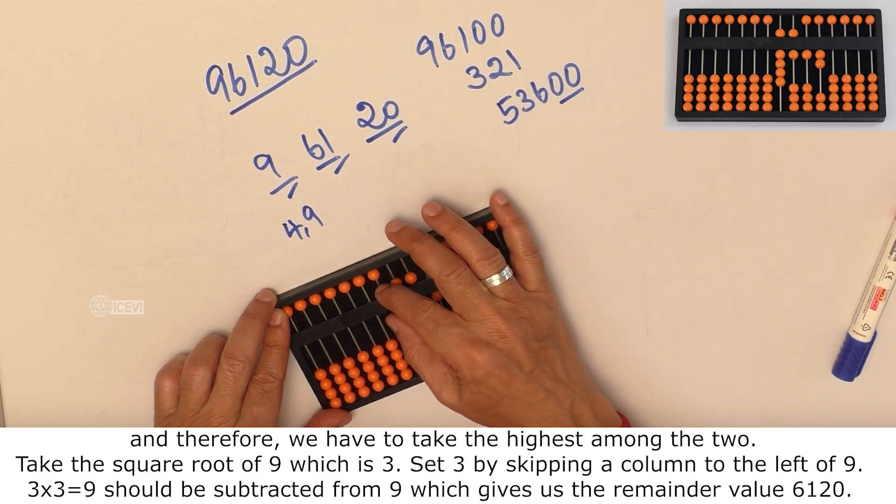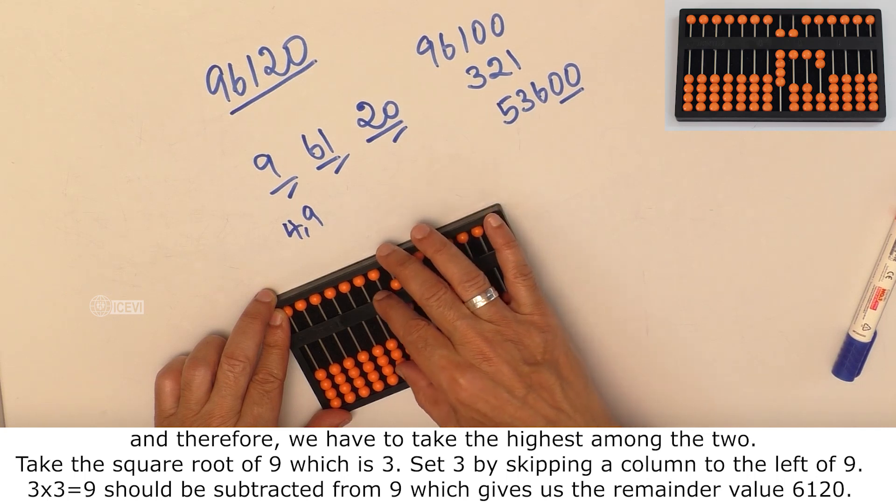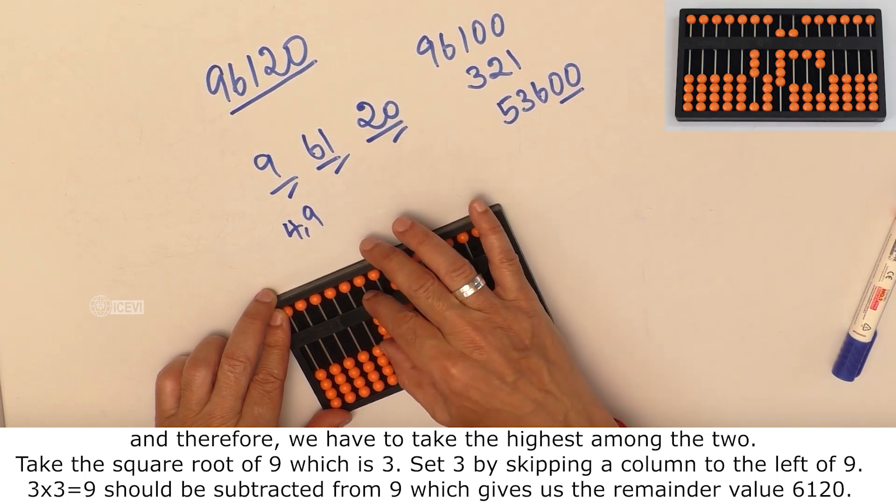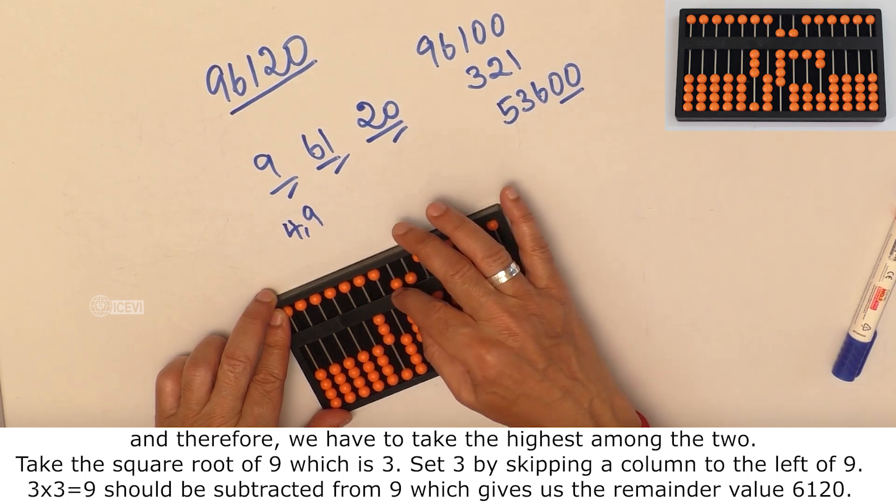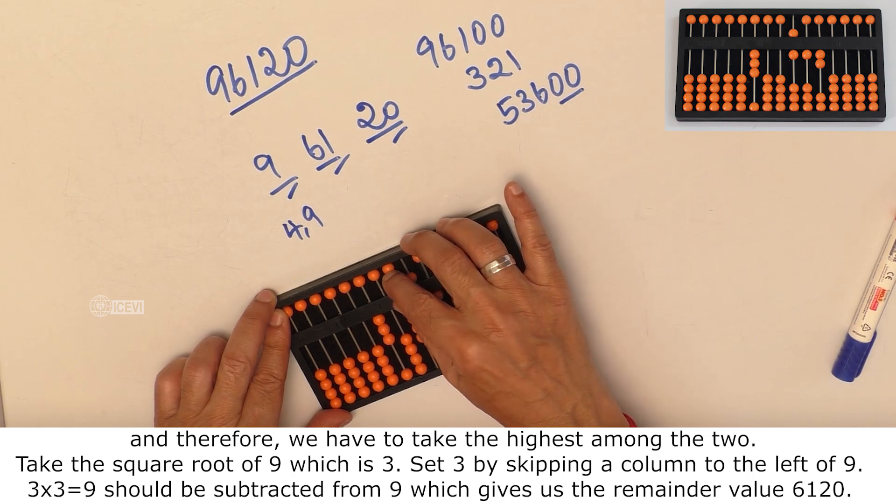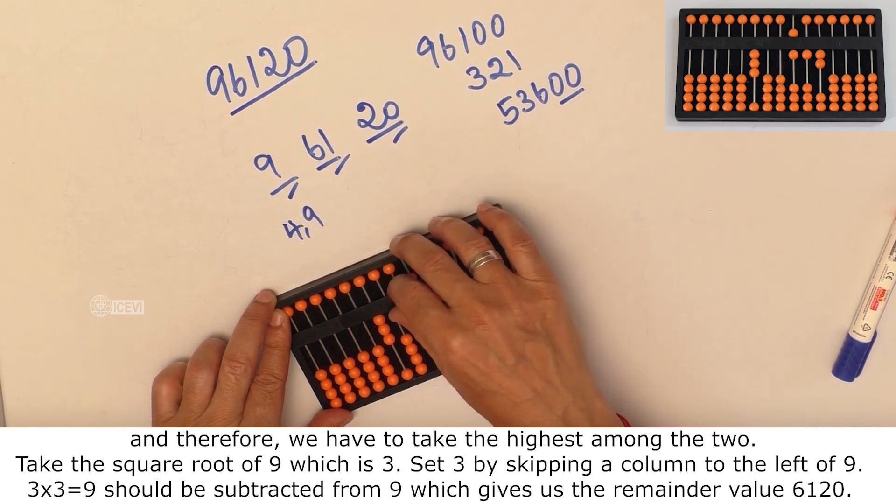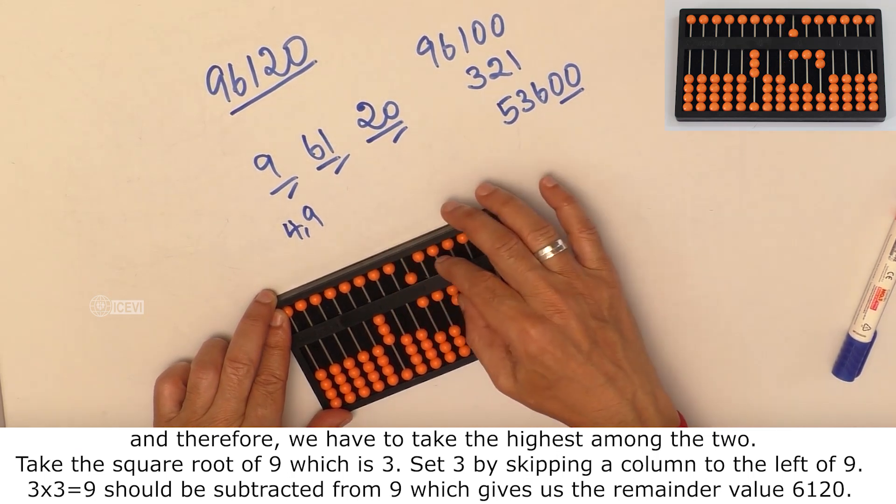By skipping a column to the left of 9, you set 3. Now, 3 multiplied by 3 is 9. That should be subtracted from 9, which gives us the remainder 6120.